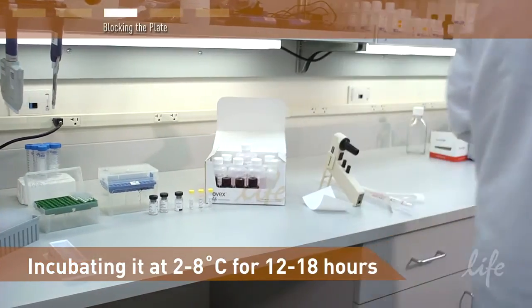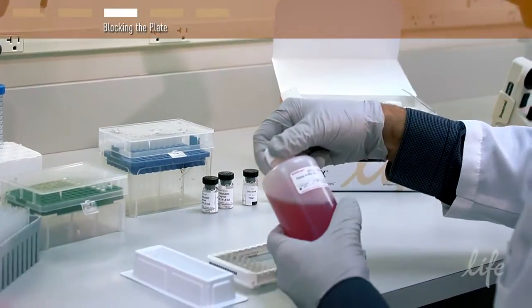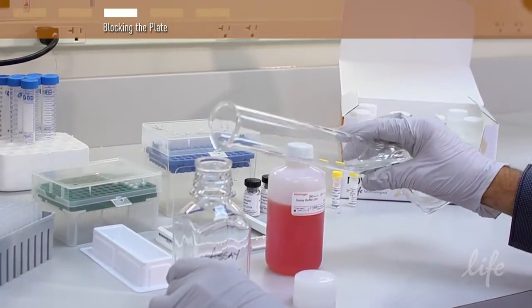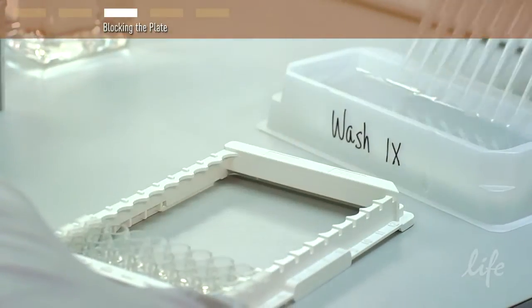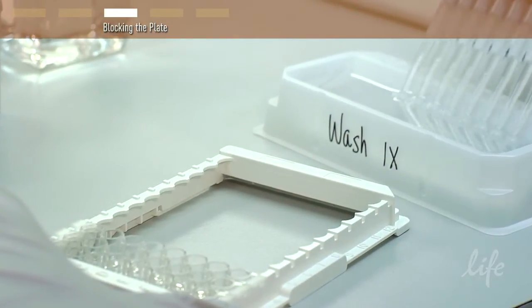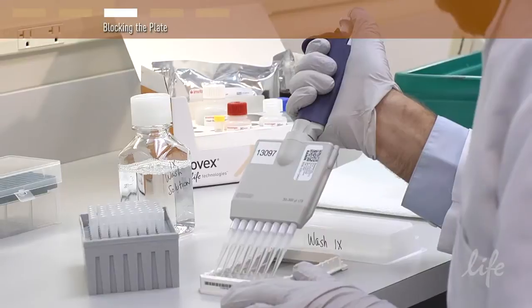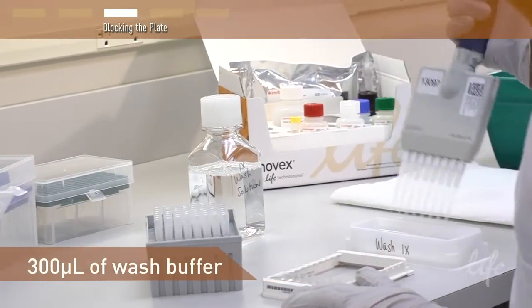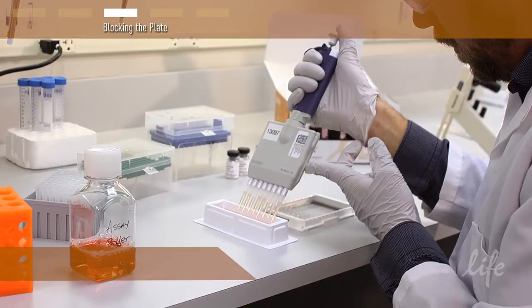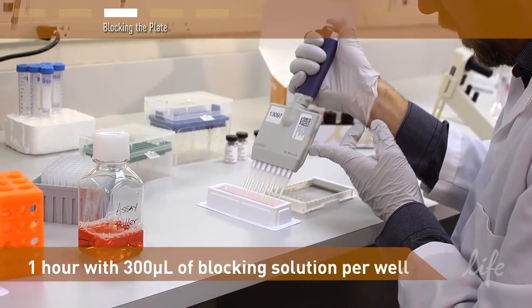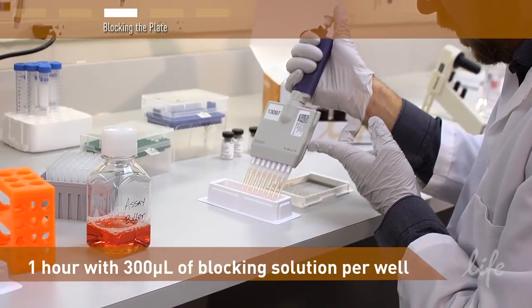Next, prepare wash and blocking buffers. Dilute the concentrated buffers with water as indicated in the protocol. Remove the antibody solution and wash the plate either manually by decanting into a basin or with an automated plate washer. Fill each well with 300 microliters of wash buffer and then decant. Remove the wash buffer and block the plate for one hour with 300 microliters of blocking solution per well.